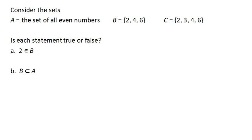So consider these three sets. A, the set of all even numbers. B, the set 2, 4, 6. And C, the set 2, 3, 4, 6. Are each of these statements true or false?